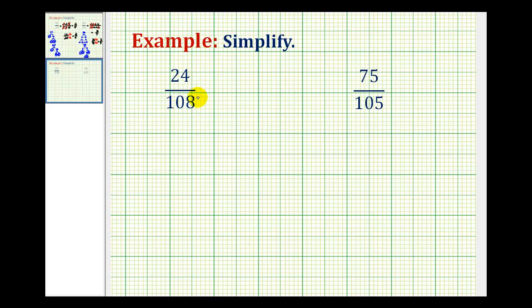So I like to use the prime factorization method, which means we'll determine the prime factorization of the numerator and denominator and then simplify out the common factors. We'll start by determining the prime factorization of 24 and 108.